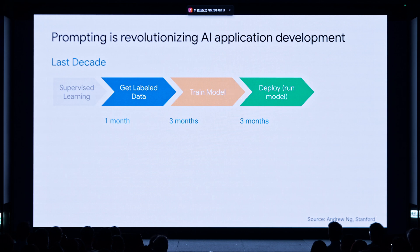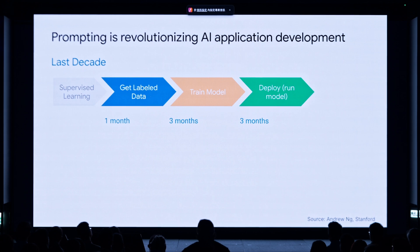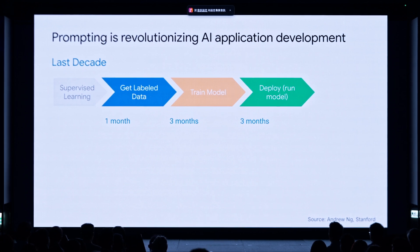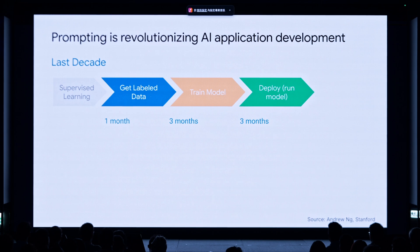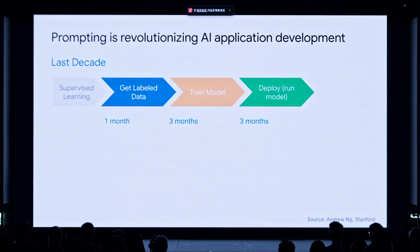In the past decade, the first decade of my career has been in BCG, and the second decade has been in SaaS and AI. In the last decade, we've worked on plenty of supervised machine learning models where we used to get label data from customers, train models for months, and then deploy them — this could take at least half a year. But now with prompting, this is becoming much faster.